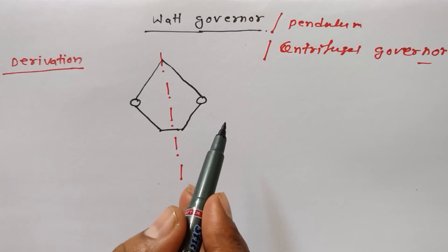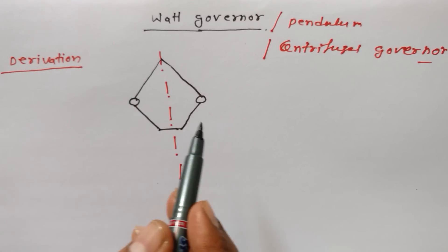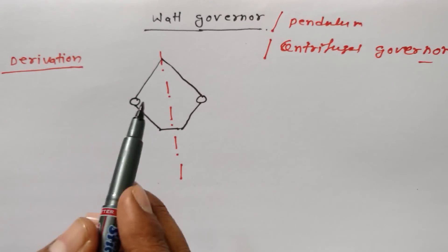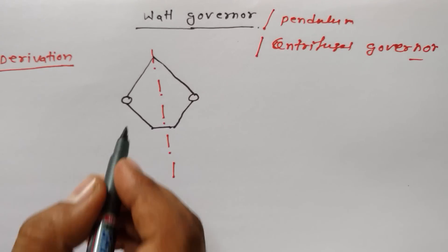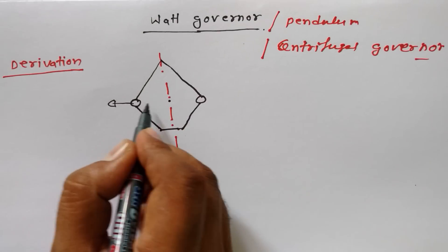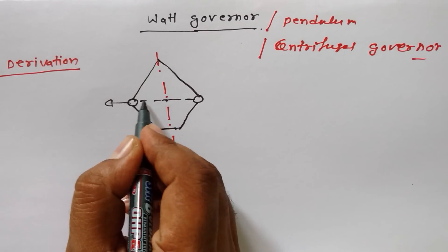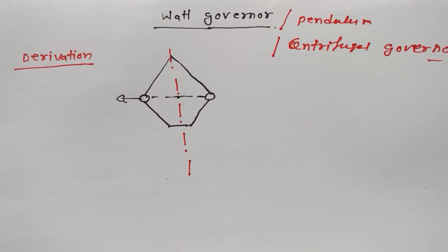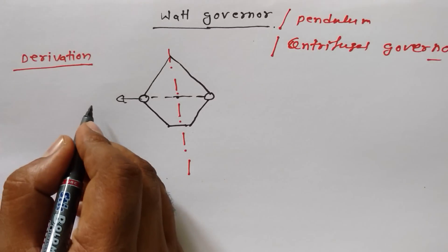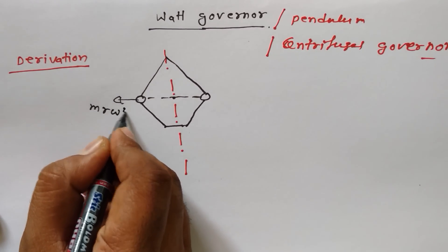The forces will be acting outward from the center of this body. So the outward force is known as centrifugal force. The formula for centrifugal force is mr*ω², where m is mass of the ball, and from here to here the distance is r.